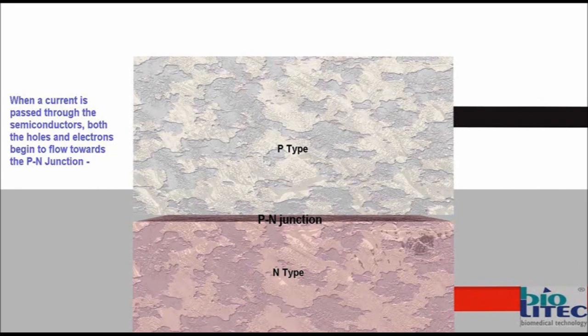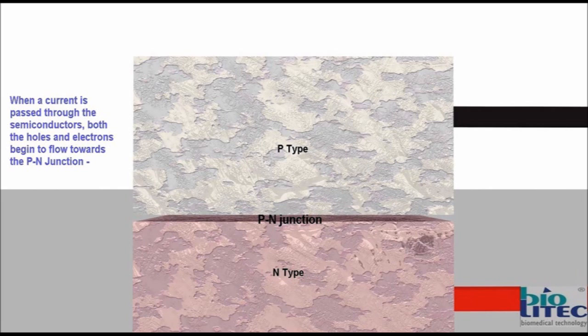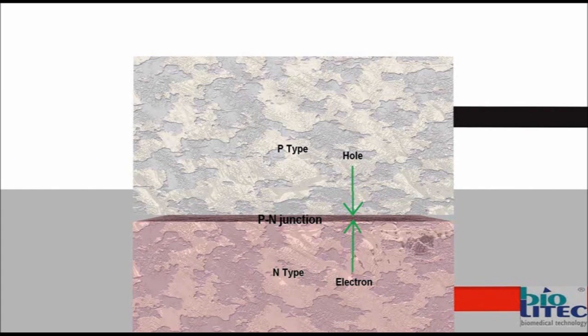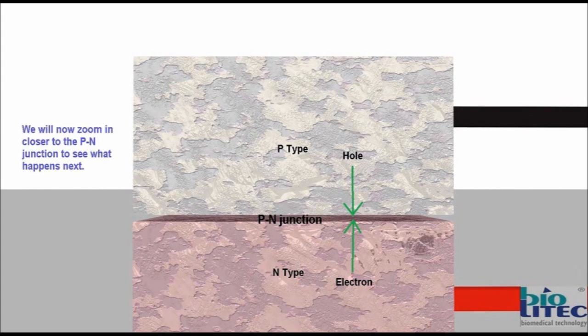When a current is passed through the semiconductors, both the holes and electrons begin to flow towards the P-N junction. We will now zoom in closer to the P-N junction to see what happens next.